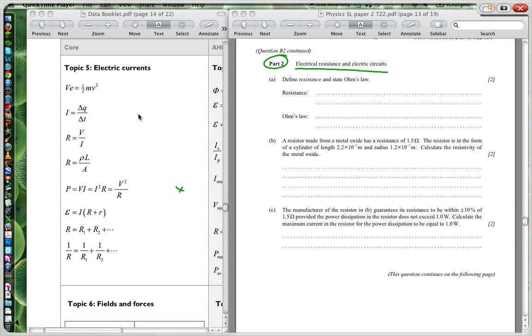Firstly we're looking at define resistance and state Ohm's law. So resistance as we can see from our formula over here is basically Ohm's law. Resistance is a ratio of your potential difference across some sort of device to the current. It's a ratio of the potential difference V to the current I for a device.